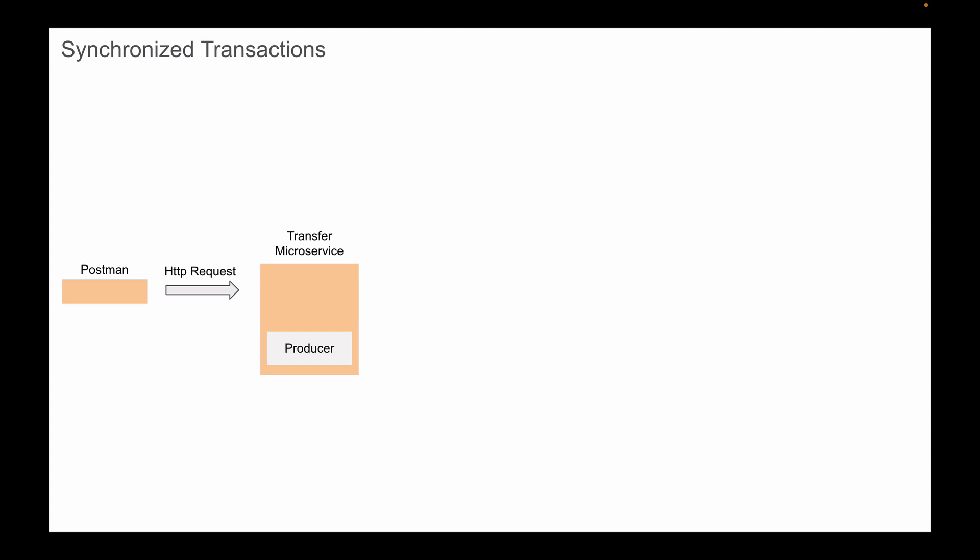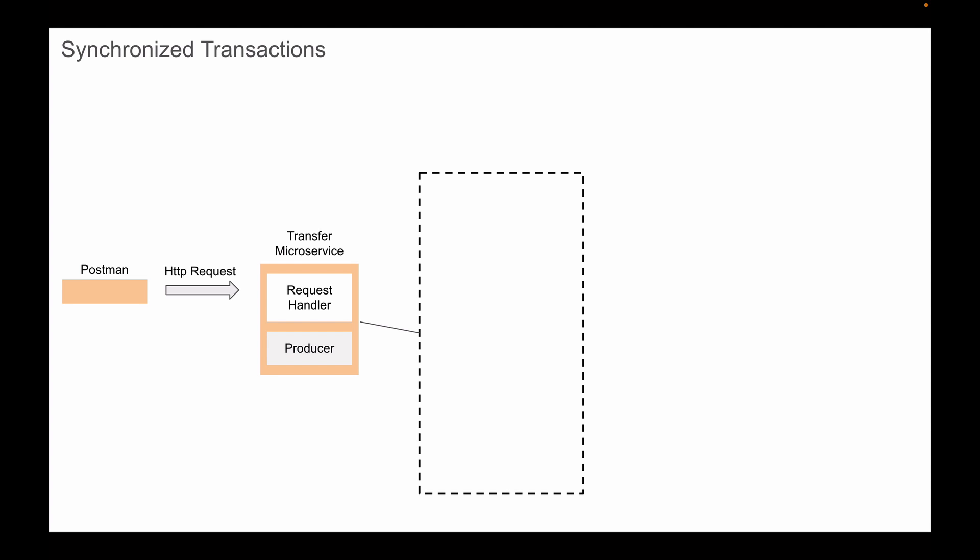Let's see how it works when database operations and Kafka operations participate in the same transaction. In the following lessons, we will have a transfer microservice that will act as a Kafka producer. To send HTTP requests to this microservice, we will use Postman HTTP client. The transfer microservice will have an HTTP request handler method that will handle the request and post money transfer details to a method in the service class that works with the Kafka producer. In the service class, we'll have a method that runs the main business logic, and in this method we will use the Kafka producer to send a Kafka message to a topic called the WithdrawMoney topic.